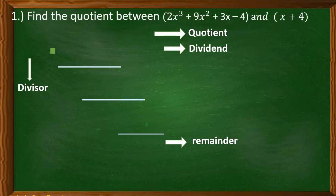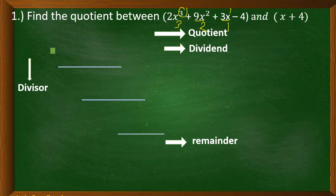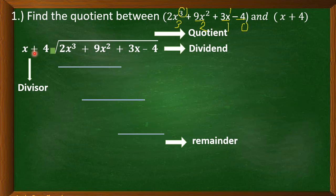Let us consider the first example: find the quotient between 2x cubed plus 9x squared plus 3x minus 4 and the quantity x plus 4. First, we check if the dividend and the divisor are already arranged in descending order. The degree of 2x cubed is 3, 9x squared is 2, 3x is 1, and the constant is 0. The terms are already in descending order with no missing terms. The divisor is already in standard form.